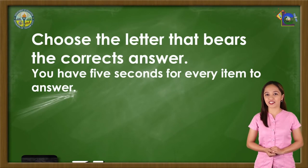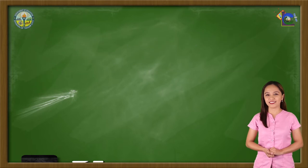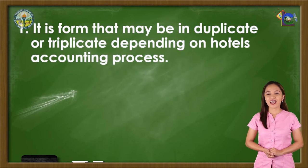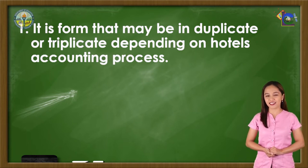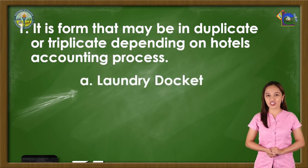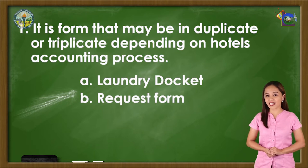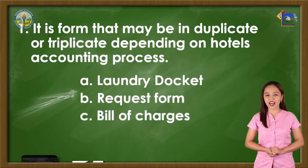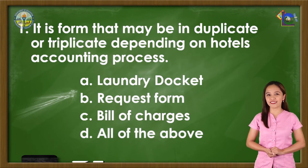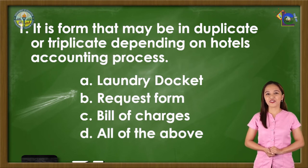Choose the letter that bears the correct answer. You have 5 seconds for every item to answer. Number 1: It is a form that may be in duplicate or triplicate, depending on the hotel's accounting processes. A. Laundry docket, B. Request form, C. Bill of charges, or D. All of the above. Good start! The correct answer is letter A, Laundry docket.